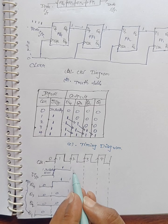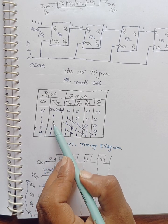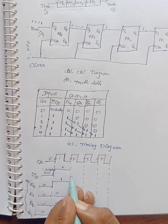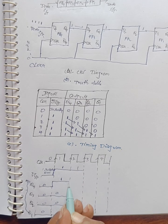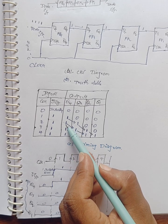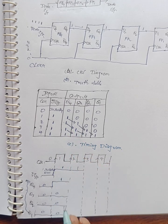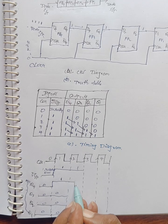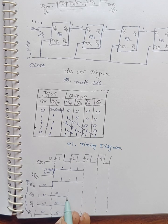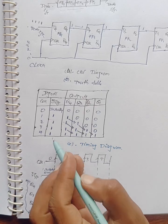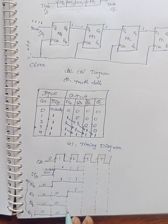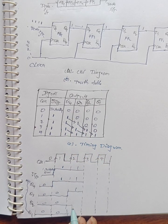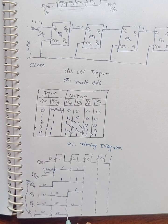Whenever the second clock pulse is applied, D input is again one. Q4 value remains one, and Q3 also becomes one. The remaining two outputs — Q2 and Q1 — remain zero.